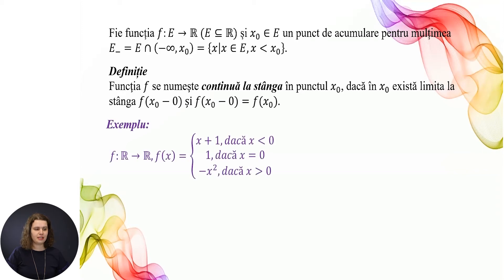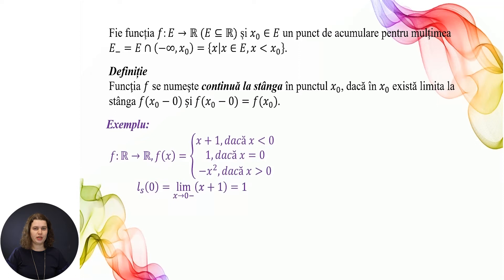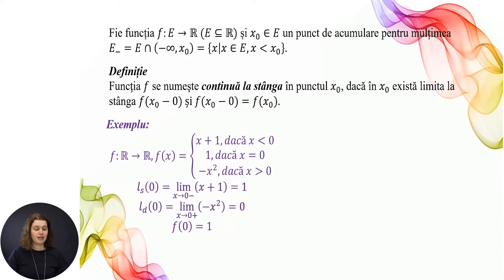Exemplu. F din R în R: f(x) = x + 1 dacă x < 0; f(x) = 1 dacă x = 0; f(x) = −x² dacă x > 0. Calculăm limita la stânga în 0: limita când x → 0⁻ a lui x + 1, care este egală cu 1. Limita la dreapta în 0: limita când x → 0⁺ a lui −x², înlocuim x = 0 și obținem 0. Și f(0) = 1. Limita la stânga este egală cu valoarea funcției în punct și egală cu 1. De aici rezultă că funcția este continuă la stânga în x = 0.